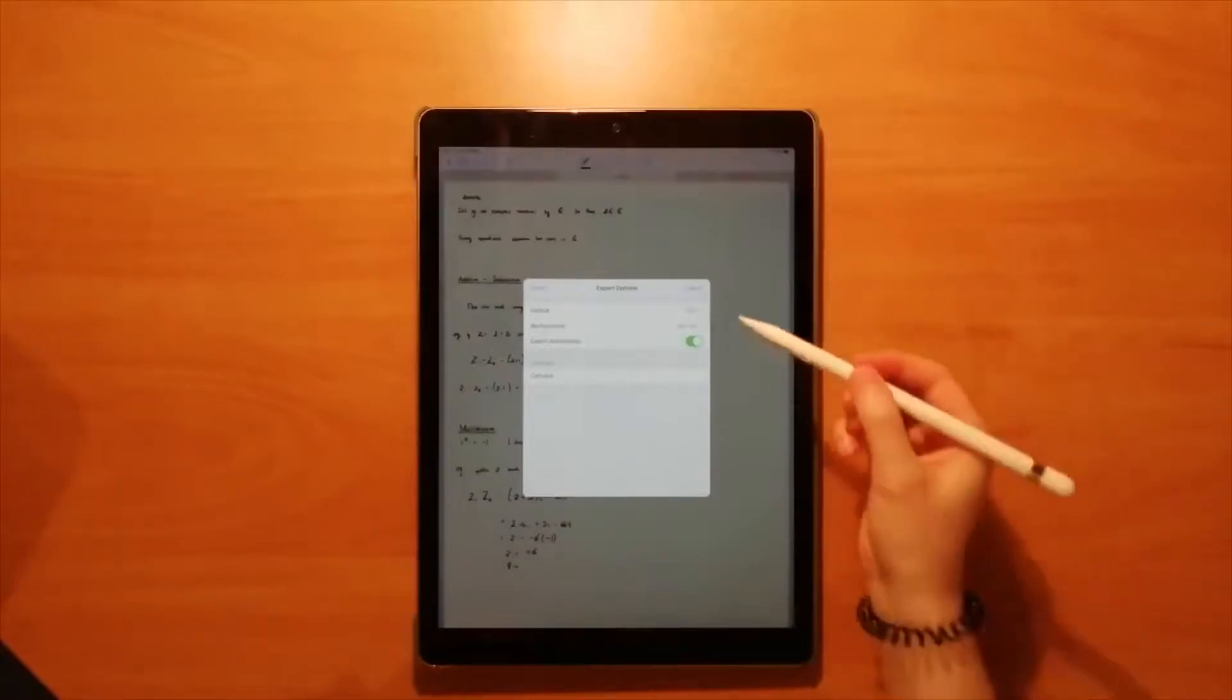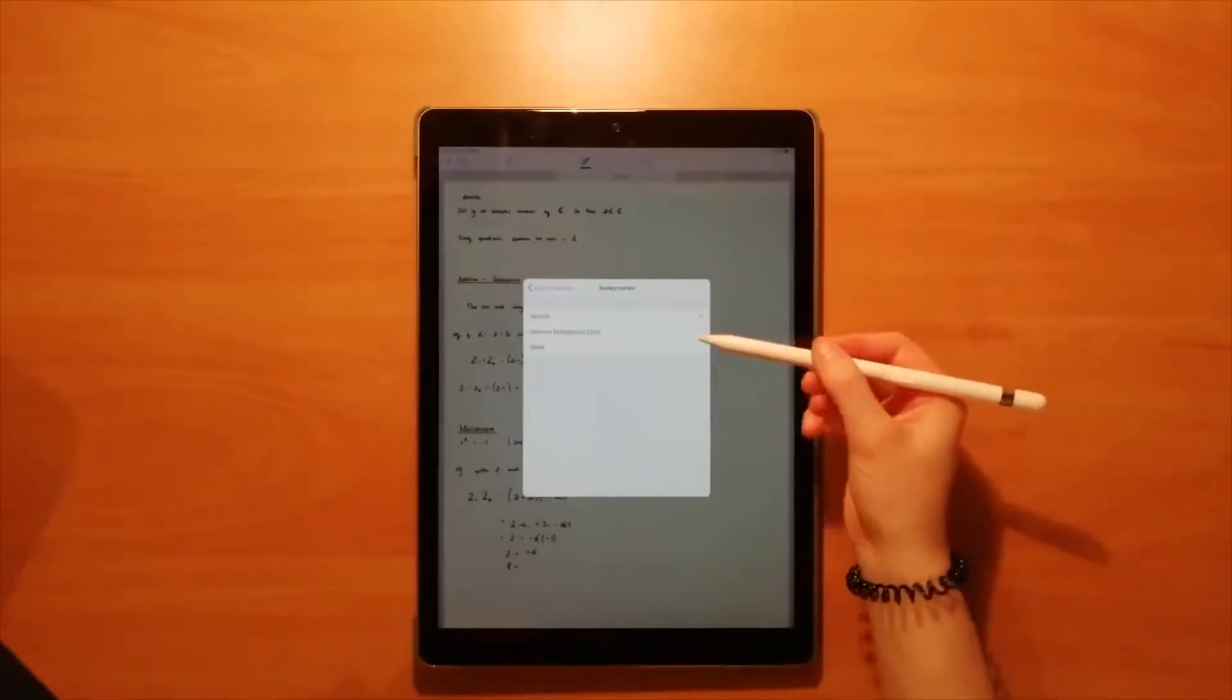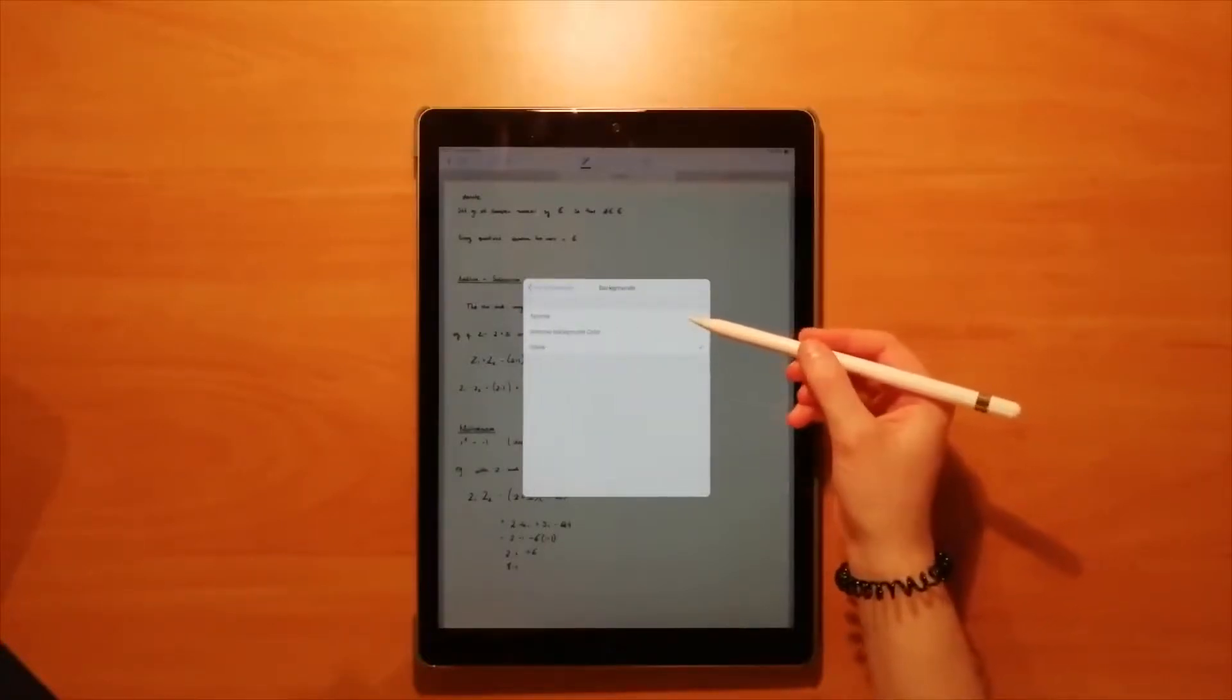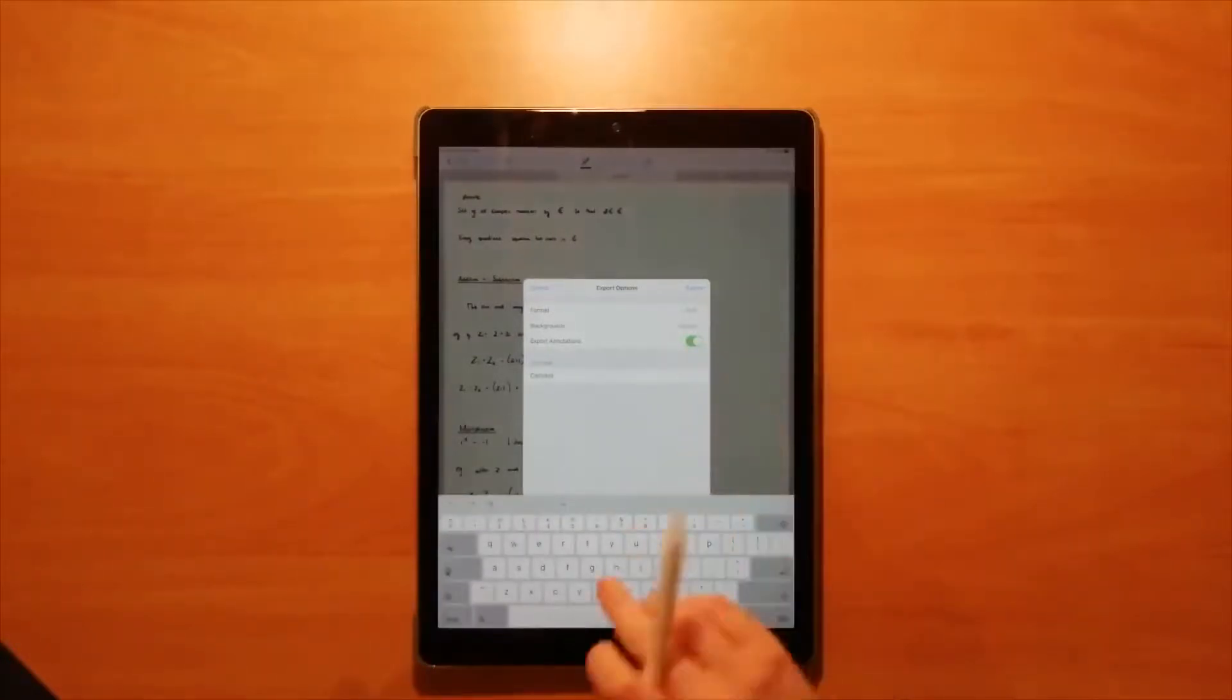Once you get to this page, you can select the format of your document. In this case, I've selected PDF, and you can select the background—that will be your usual GoodNotes page or just a blank background. Then finally, you can name it.